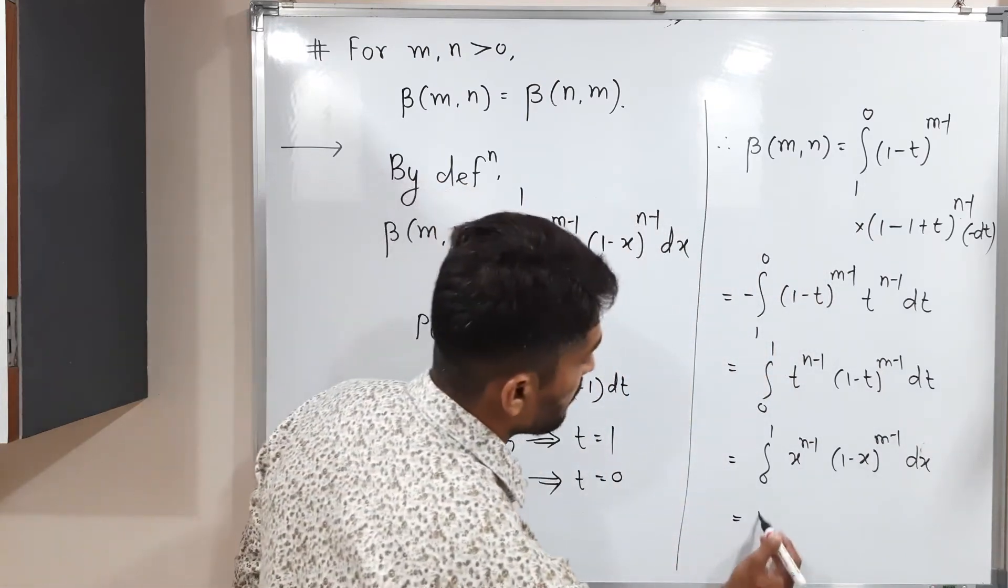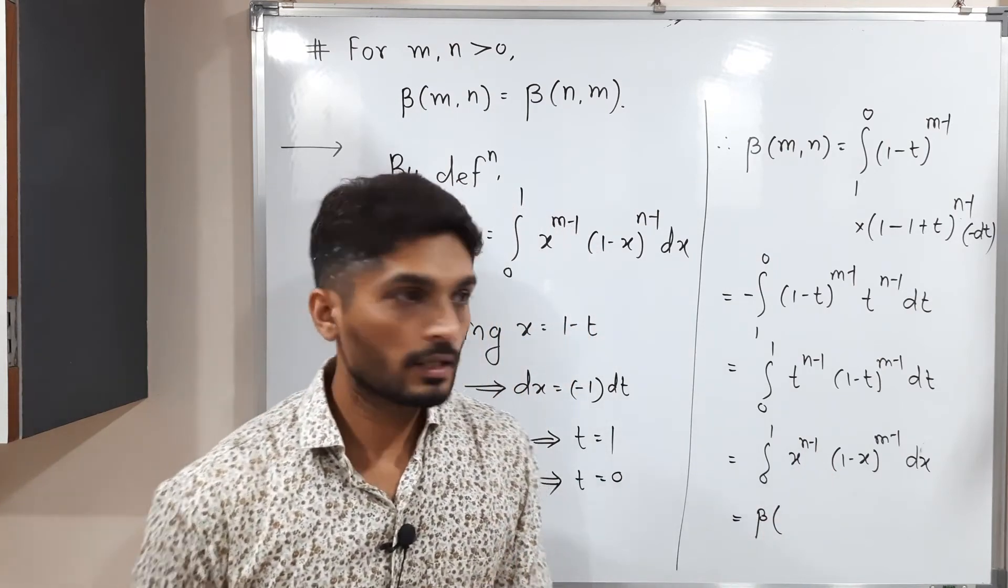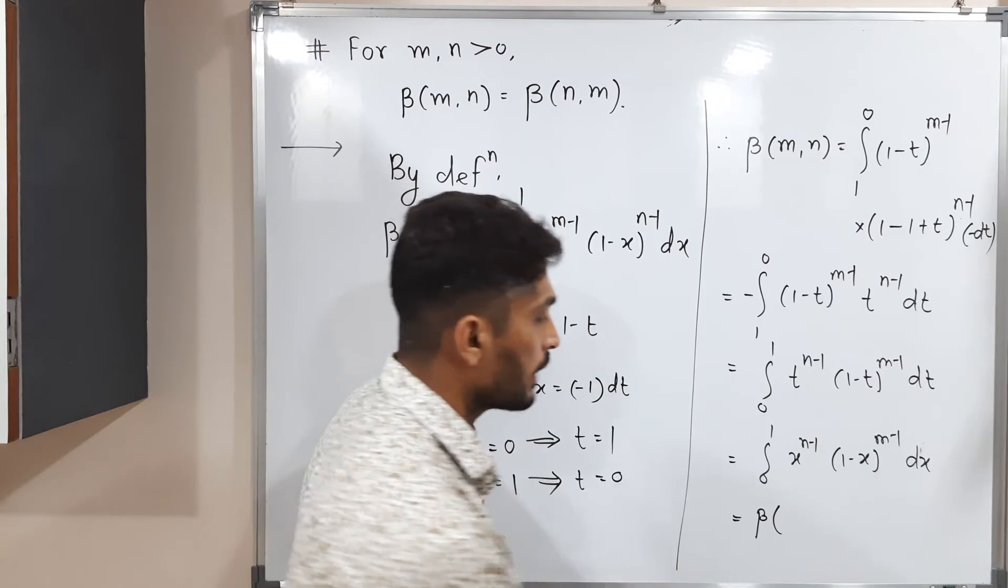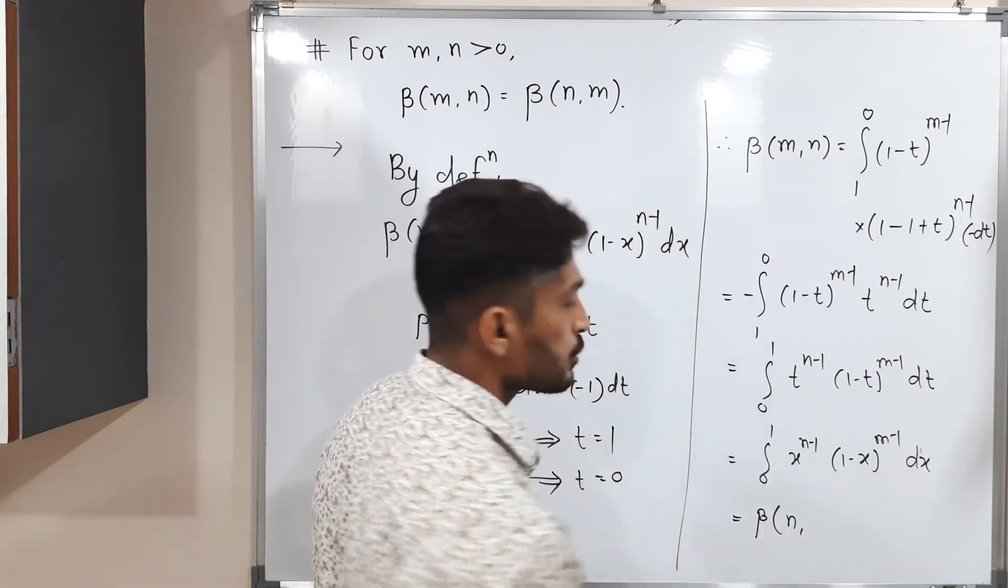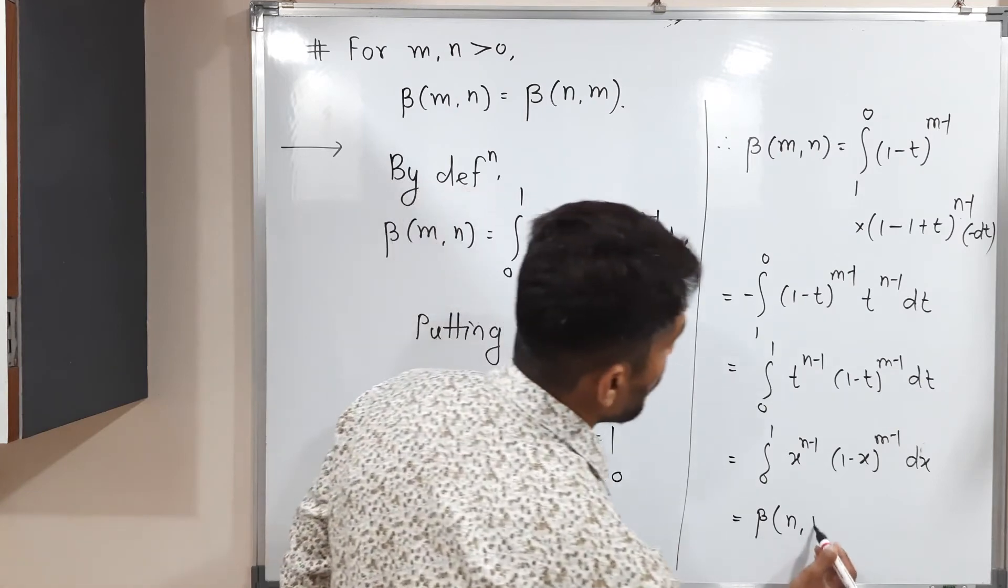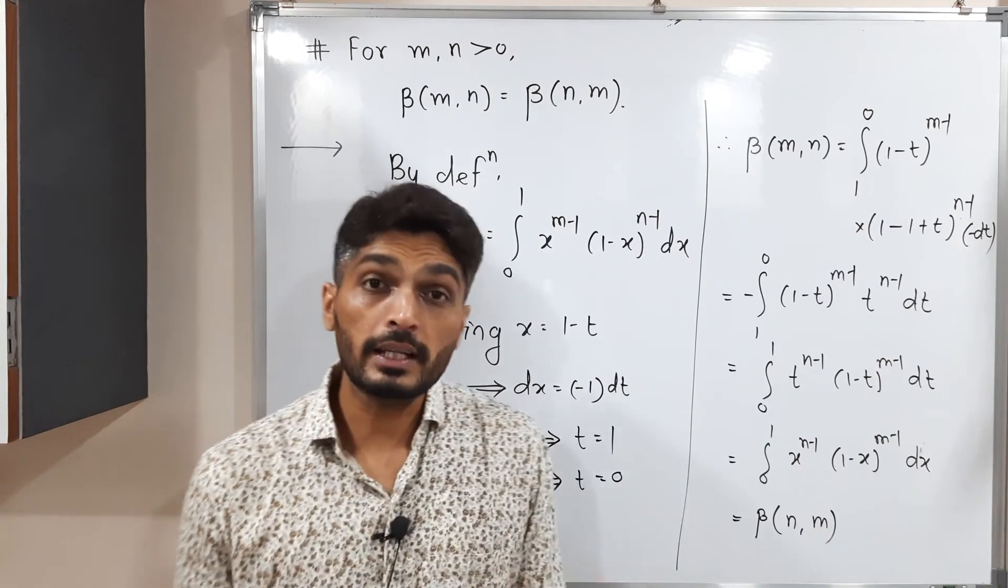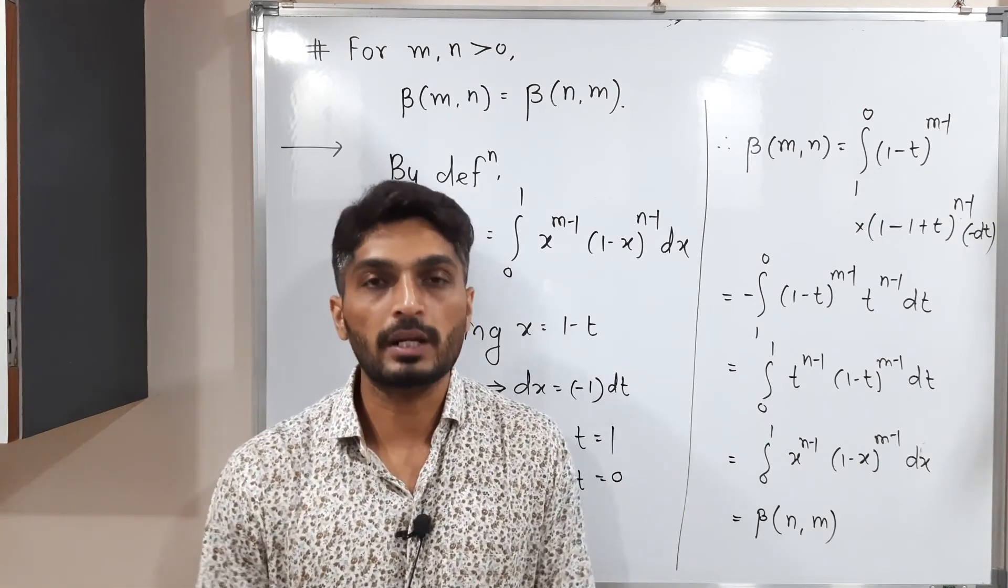So yes, this is the definition of beta function. Beta of what? We add 1 in power of x. So n minus 1 is there. If you add 1, we will have n. And here also we add 1. So m minus 1 plus 1, that means we will have m. So did you notice we started with beta of mn and finally we got beta of nm. So in this way, we proved yes, both of them are equal.